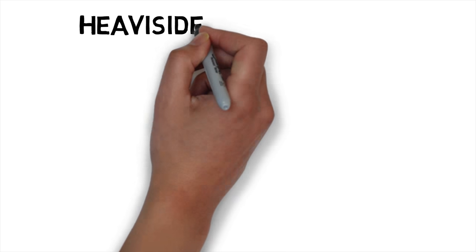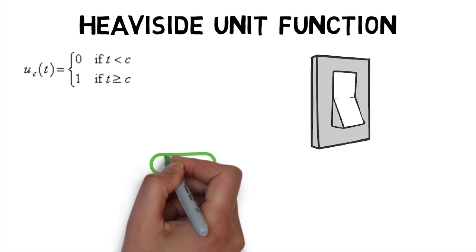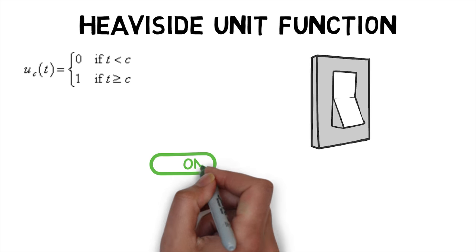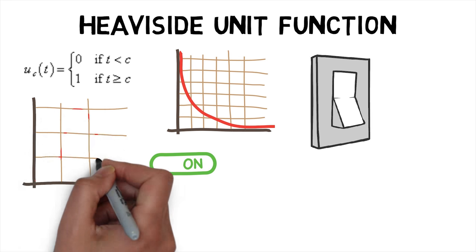A Heaviside Unit function is defined as a function where u_c(t) equals 0 for t less than c and equals 1 if t is greater than c. It can be visualized as a mathematical switch that turns on when the value in the x-axis crosses c. The graphs can be of any type and not only constants.